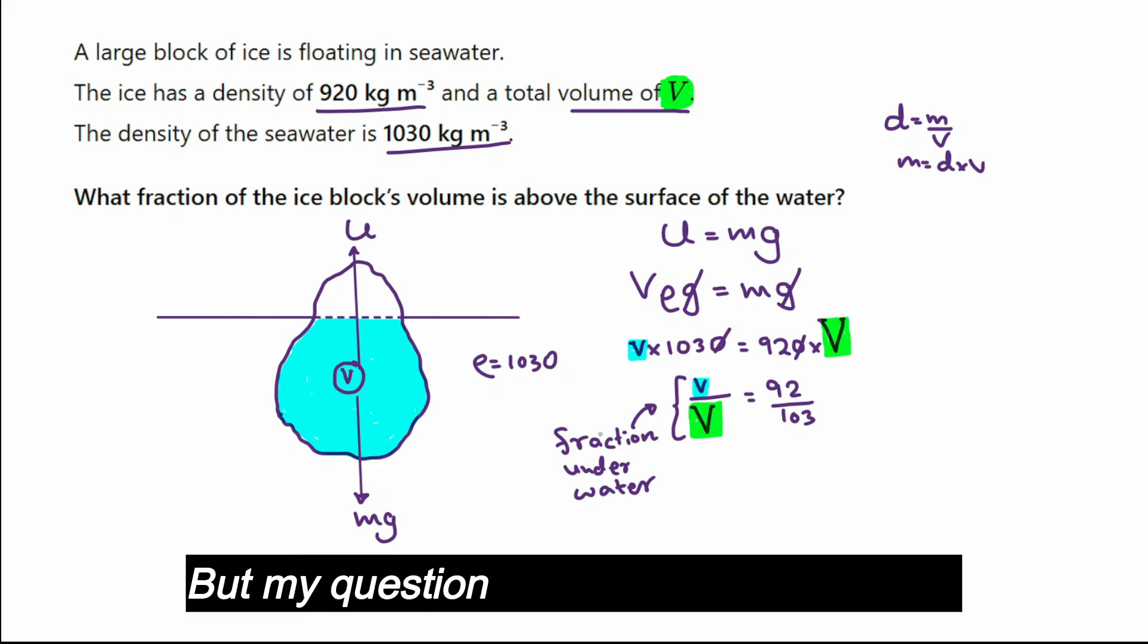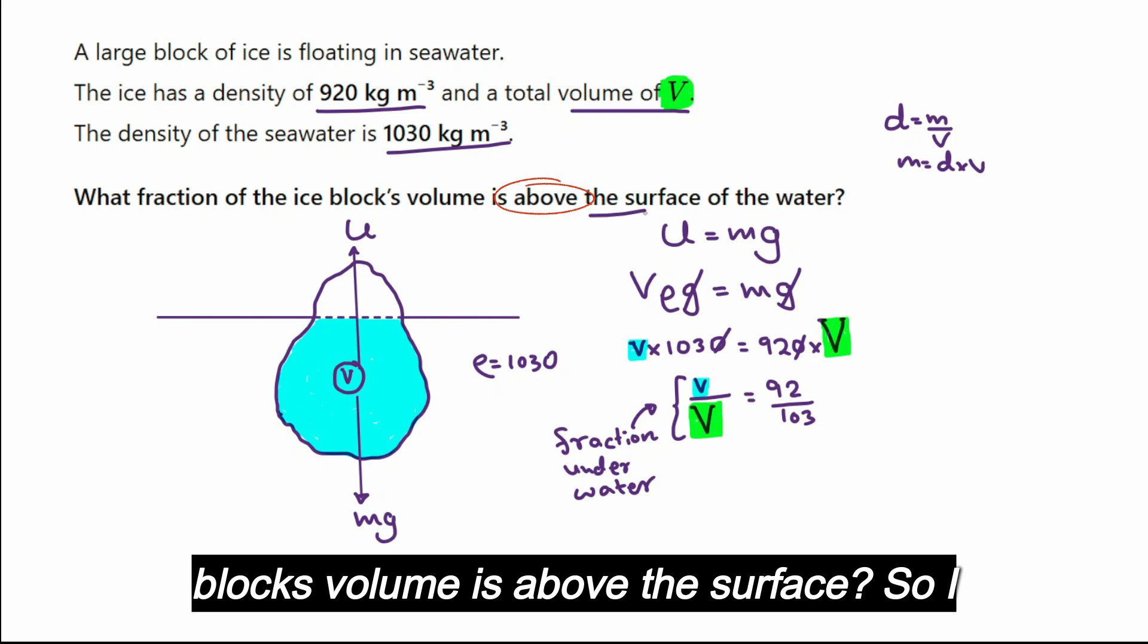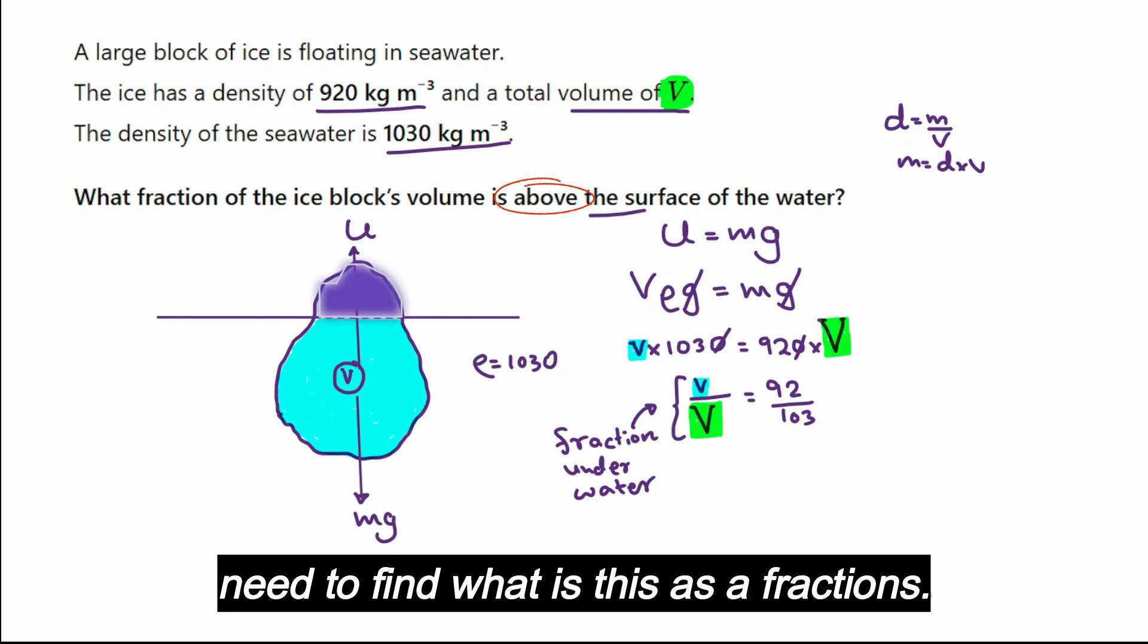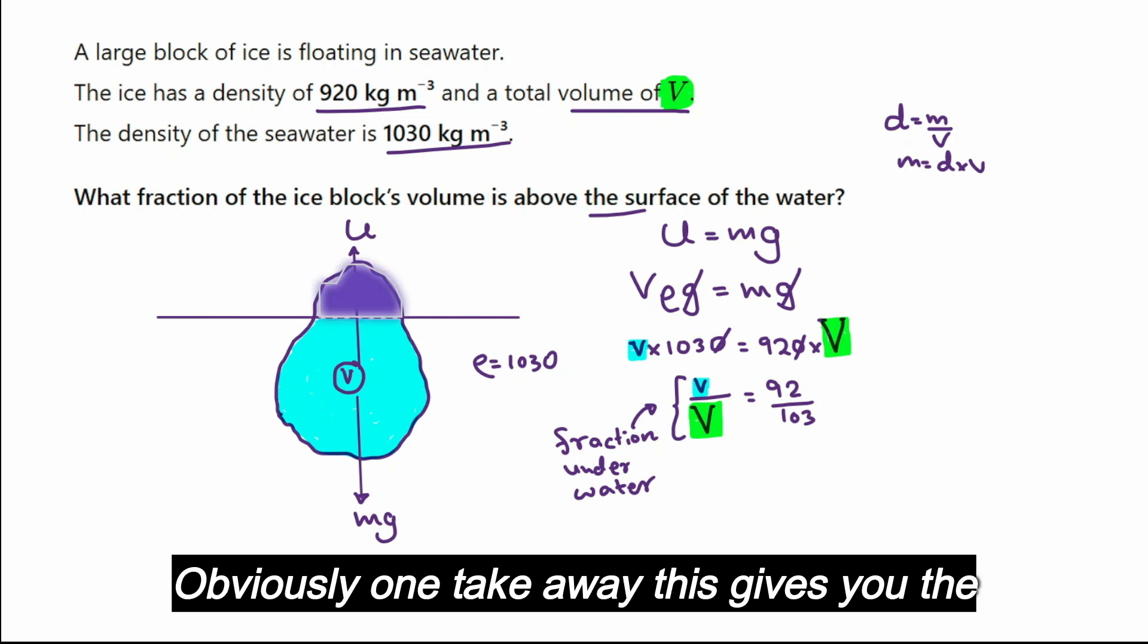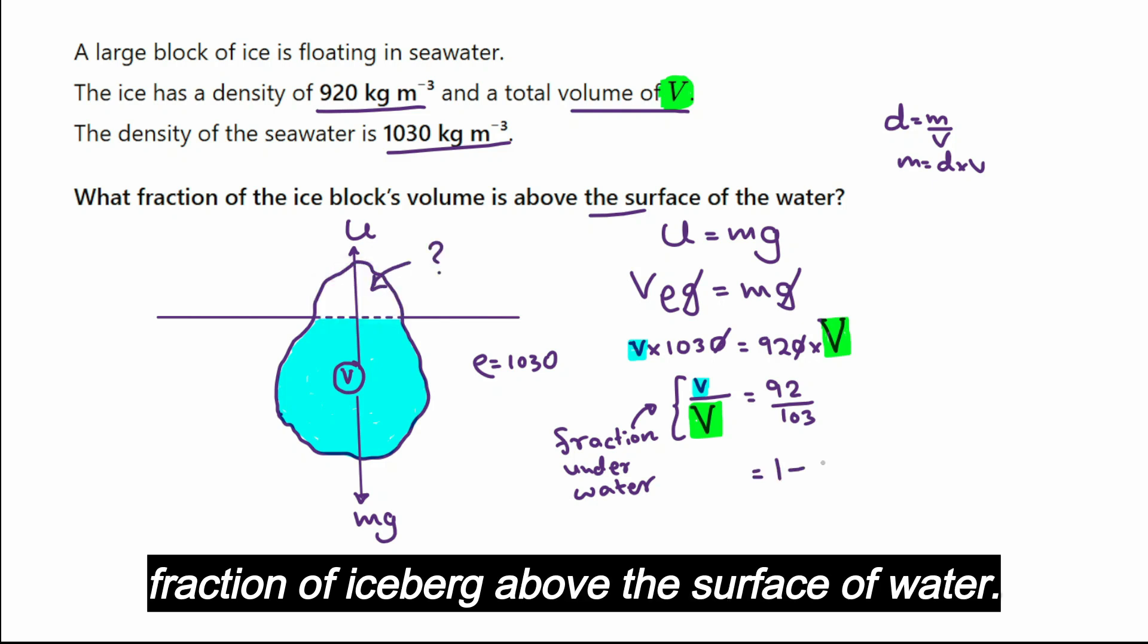But my question is, what fraction of the ice block's volume is above the surface? So I need to find what is this as a fraction. Obviously, one takeaway this gives you the fraction of iceberg above the surface of water.